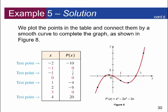Here are the test points. The x-intercepts are negative 1, 0, and 3. I pick a point outside the first one, a value between negative 1 and 0 — one half — values between 0 and 3 — 1 and 2 — and a value beyond 3, which is 4. When I plug in negative 2 I get negative 10; negative 1 gives 0; negative one-half gives 7 eighths; 0 gives 0; 1 gives negative 4; 2 gives negative 6; 3 gives 0; and 4 gives 20. I use those points to plot a nice smooth curve.